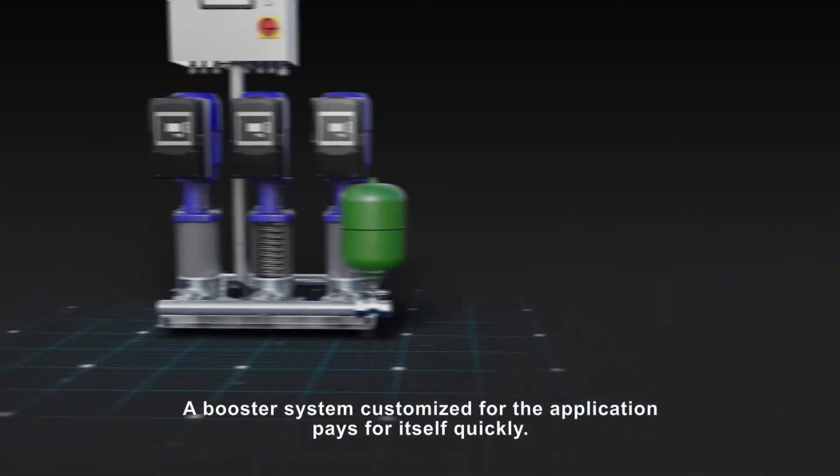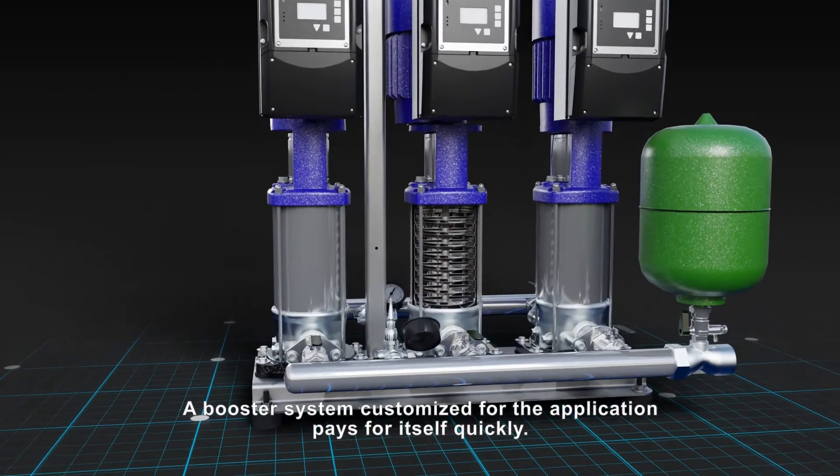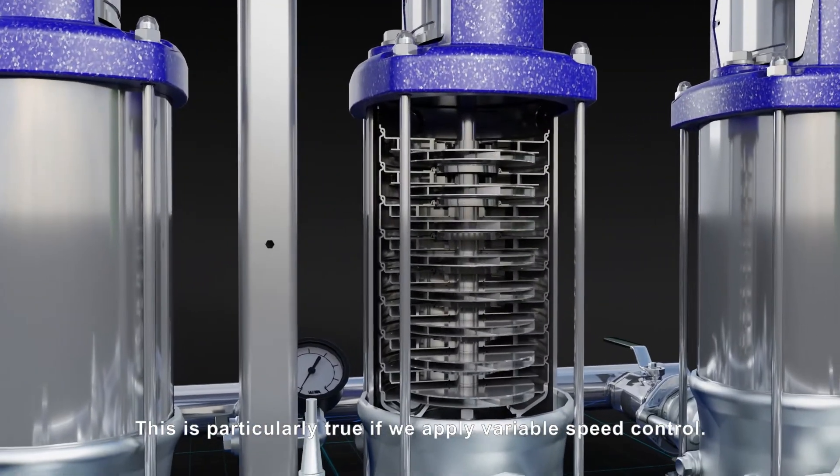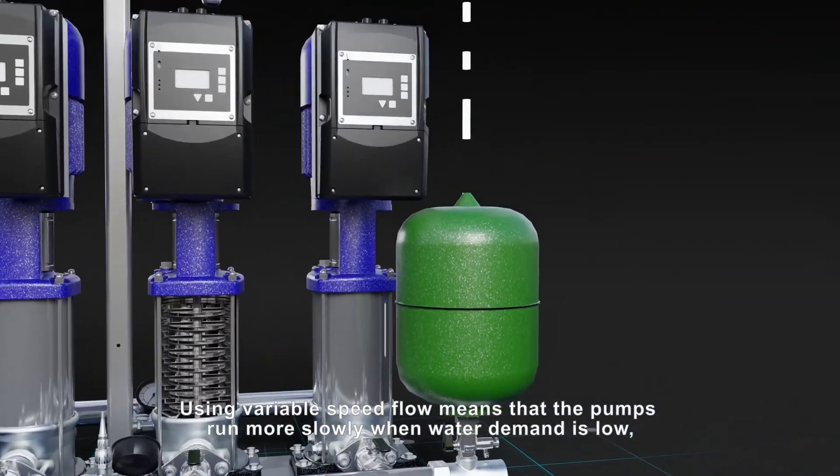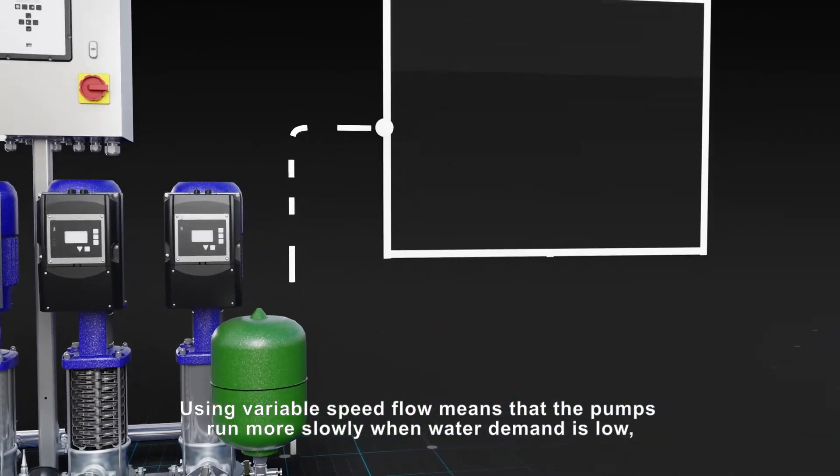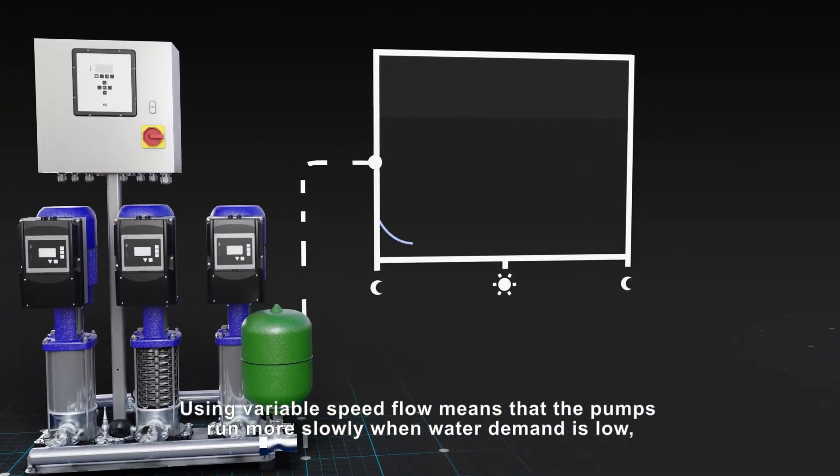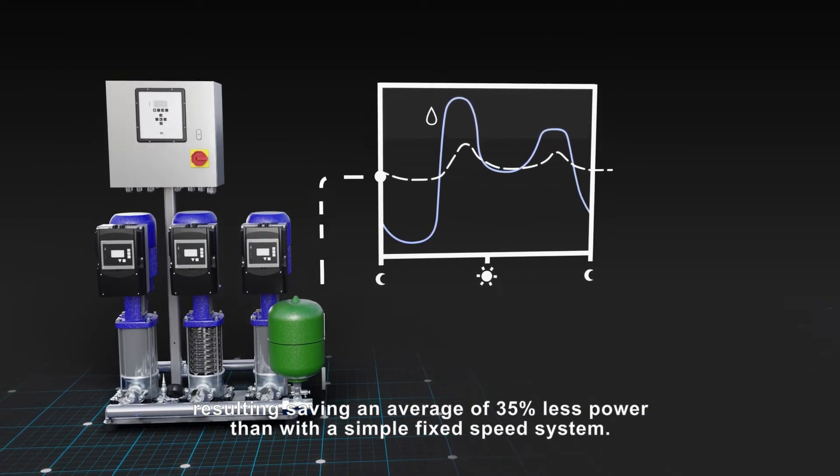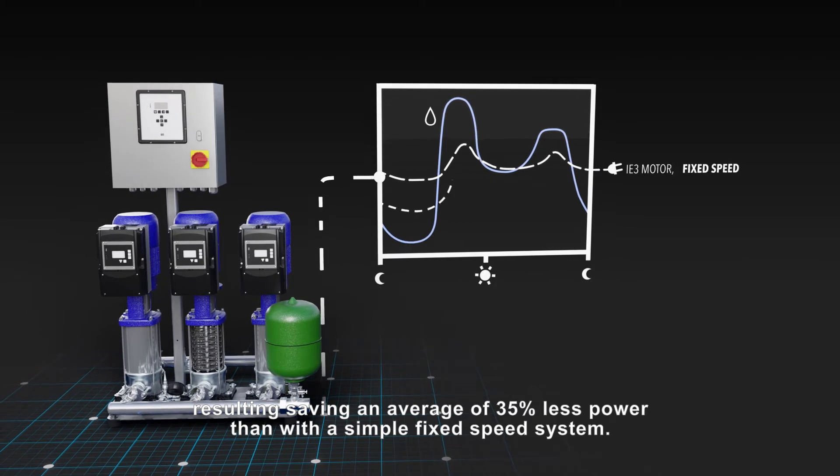A booster system customized for the application pays for itself quickly. This is particularly true if we apply variable speed control. Using variable speed flow means that the pumps run more slowly when water demand is low, resulting in saving an average of 35% less power than with a simple fixed speed system.